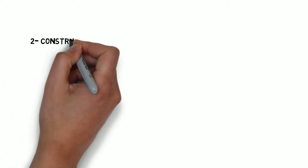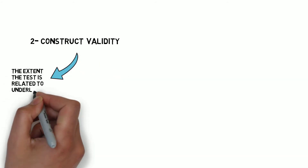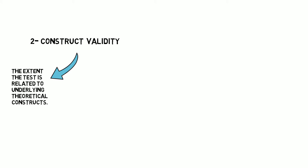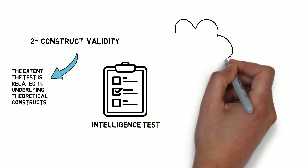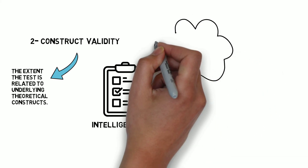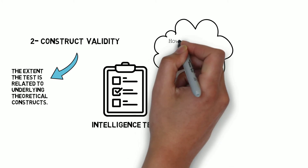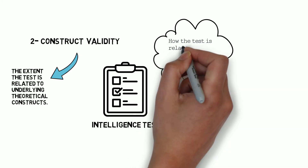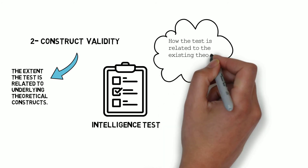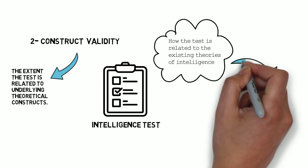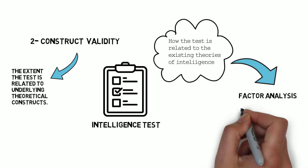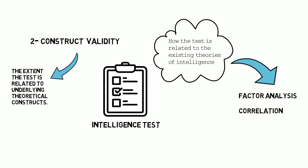The second type of validity is construct validity. Construct validity refers to the extent to which a test is related to an underlying theoretical construct — for example, whether a test captures the existing theories of intelligence. There are many ways to demonstrate construct validity, such as factor analysis or correlational analysis, which are statistical tools used for this purpose.